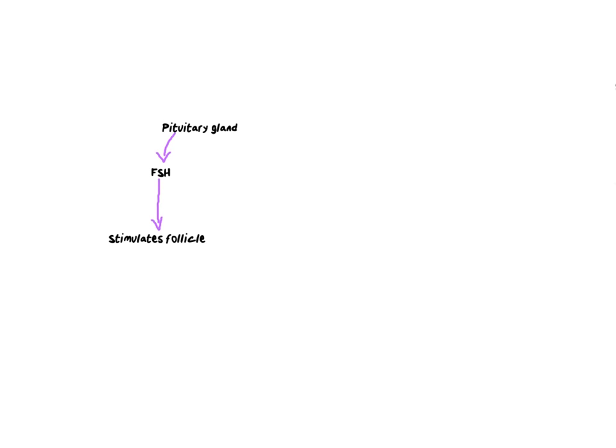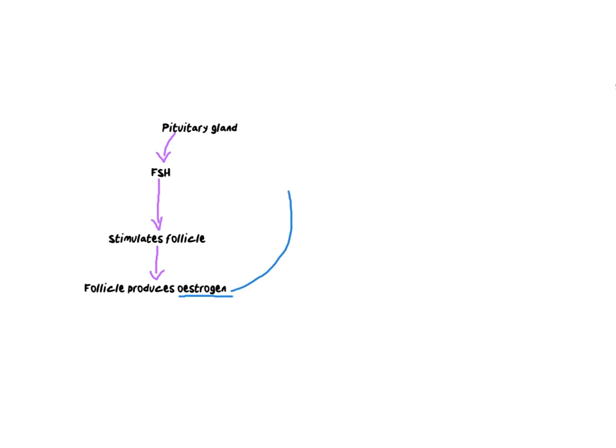As the follicle develops, it starts to produce estrogen. That estrogen — color-coded here — is going to have an effect on the pituitary gland as well. Estrogen is secreted out of the follicle and that information is sent back to the pituitary gland.